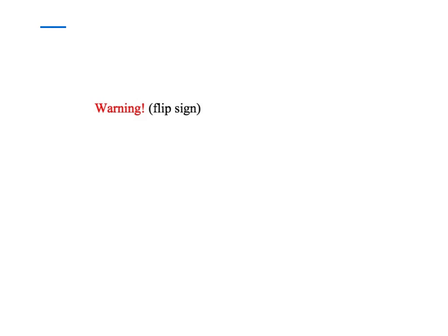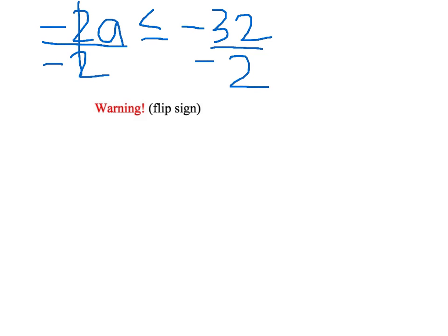We still have negative 2a is less than or equal to negative 32. We're going to divide by negative 2 on both sides. Now, as you can see, we have a warning sign right here. That's because when you divide by a negative number, you need to flip the sign. So, we're going to have a is now greater than or equal to 16.